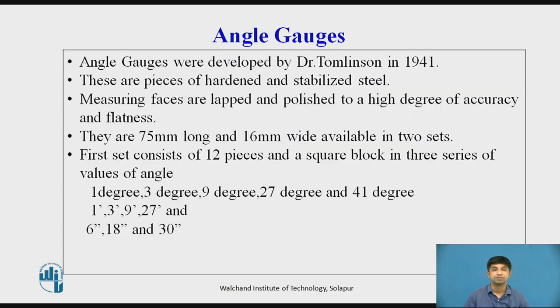Angle gauges were developed by Dr. Tom Lenson in 1941 which enable any angle to be set to the nearest 3 seconds. These are pieces of hardened and stabilized steel. The measuring pieces are lapped and polished to a high degree of accuracy and flatness. They are 75mm long and 16mm wide and are available in 2 sets.